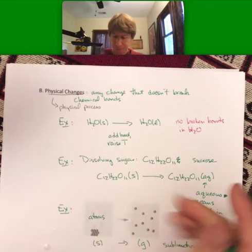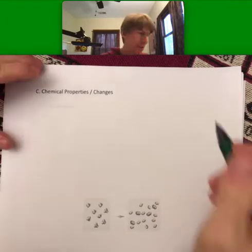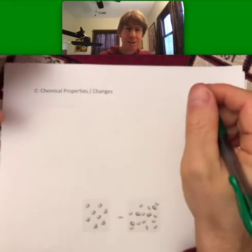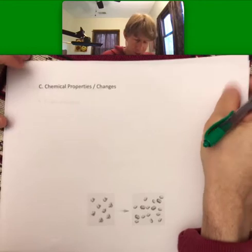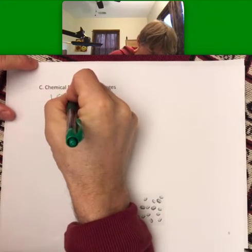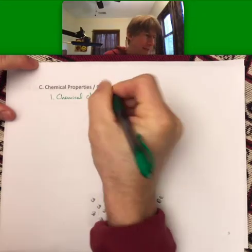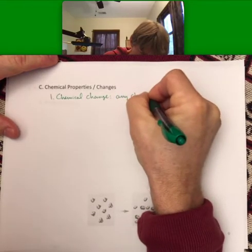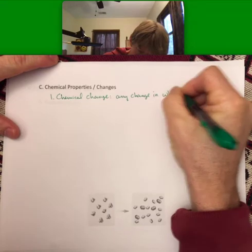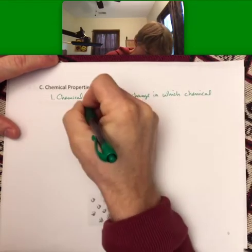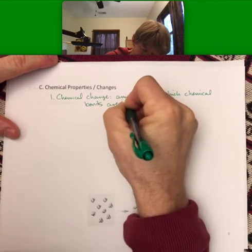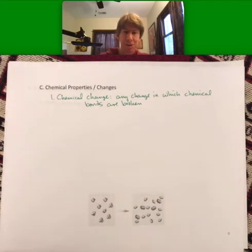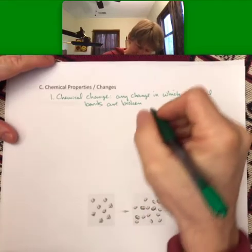Now let's talk about chemical properties and changes. Chemical properties and changes we lump in the same category, at least the way I teach it. So a chemical change is any change in which chemical bonds are broken.